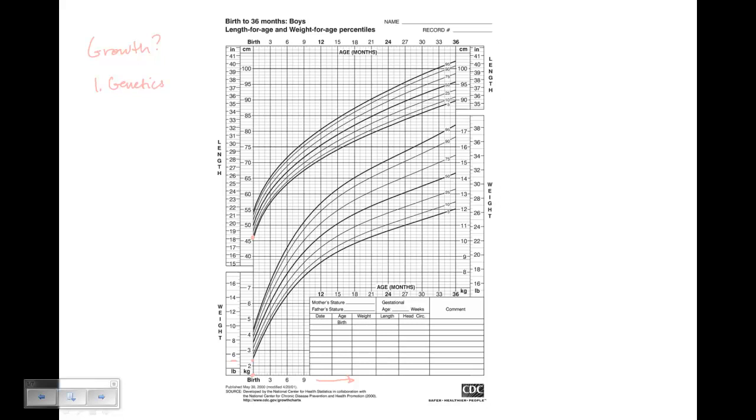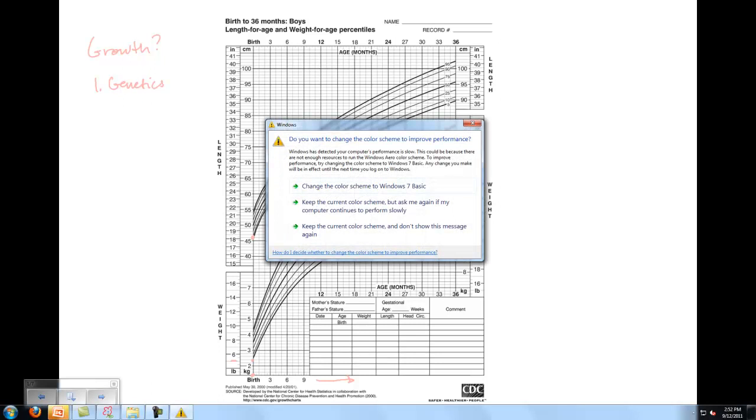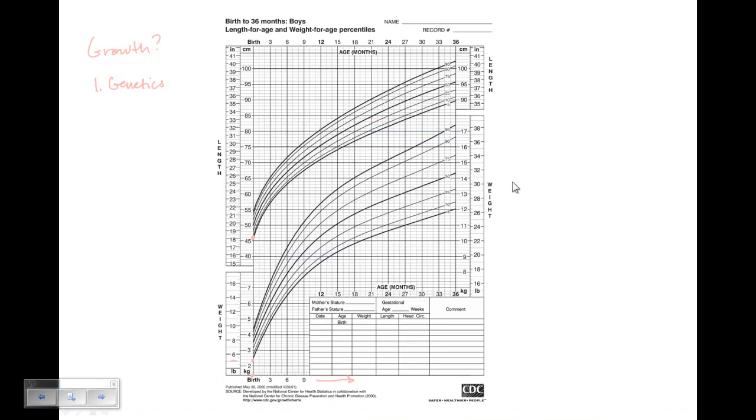You will meet parents whose babies seem to be larger or smaller than they are. But by age three, the child should be in his or her genetic groove, if you will.